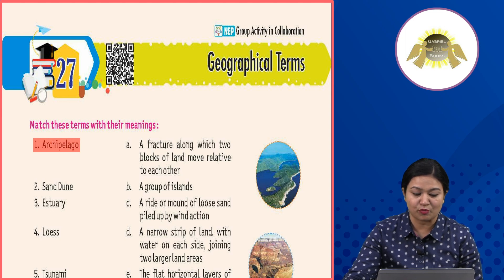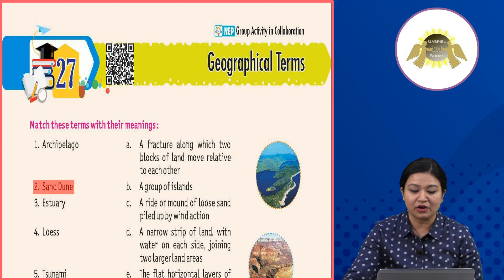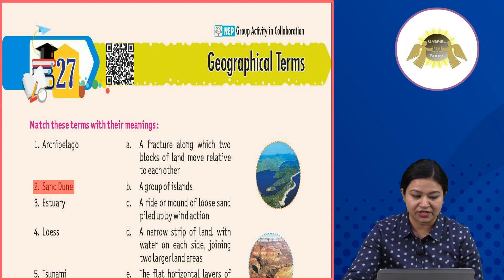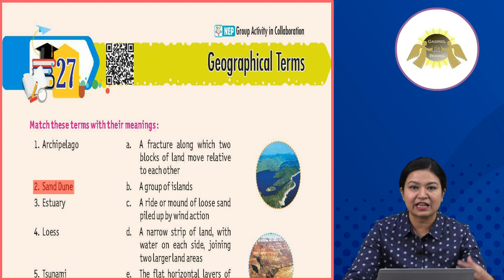Second: Sand Dune — a ridge or mound of loose sand piled up by wind action. Sand dunes are formed when wind piles up sand into a mound or ridge shape.